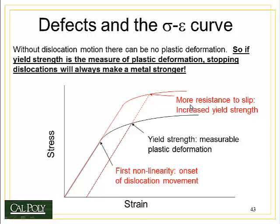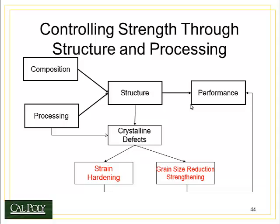This means more resistance to slip, which leads to increased yield strength. All of these defects increase the strength of metals by making it harder for dislocations to move. We'll look at each one in detail and see exactly why it gets harder for a dislocation to move based on the different defects.